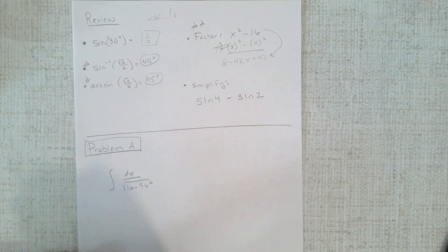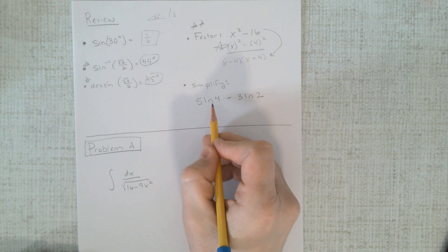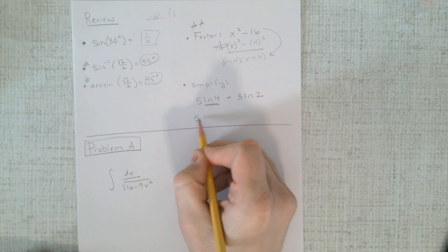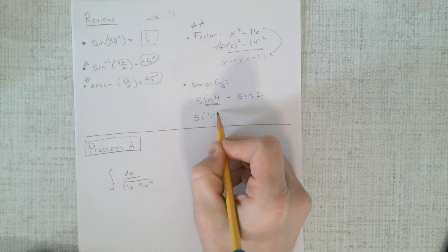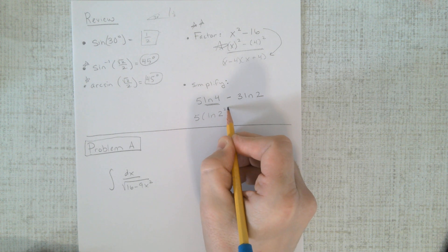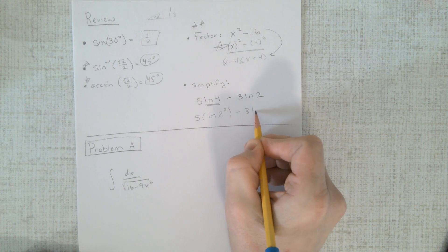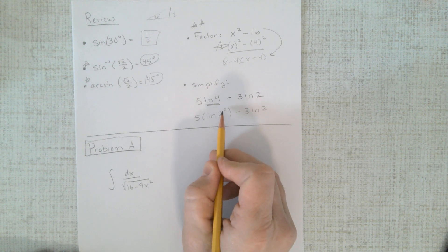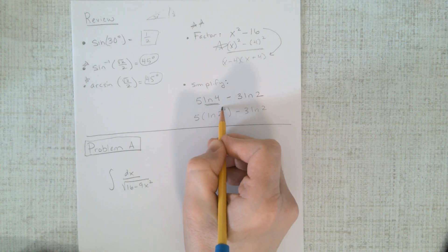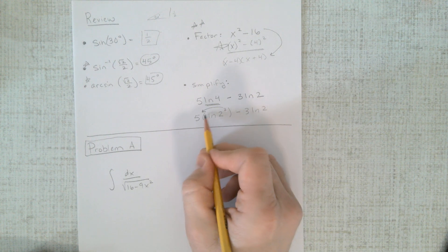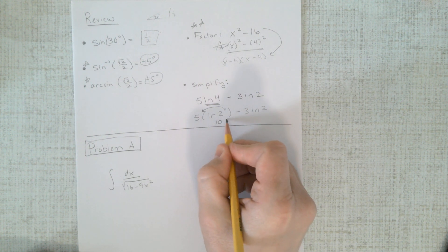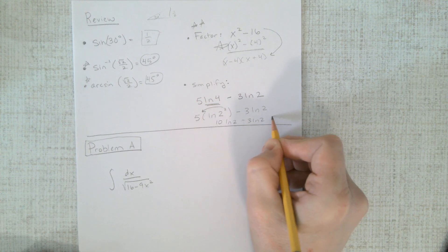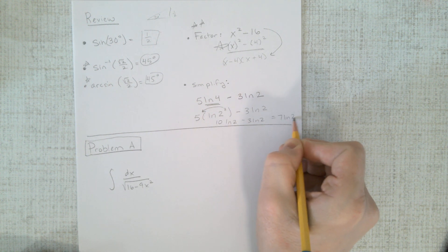Simplify here. At first glance, that looks pretty simple to me. However, 4 can be rewritten as ln of 2 squared, right? That's what 4 is. And then if I have this power inside a log, the rule is this power can come down. So the 2 can come out there. There's already a 5 out there, so that makes it 10 ln of 2 minus 3 ln of 2 equals 7 ln of 2.